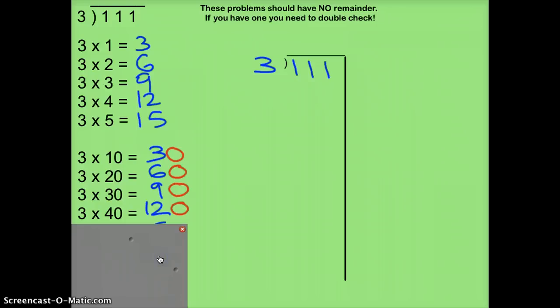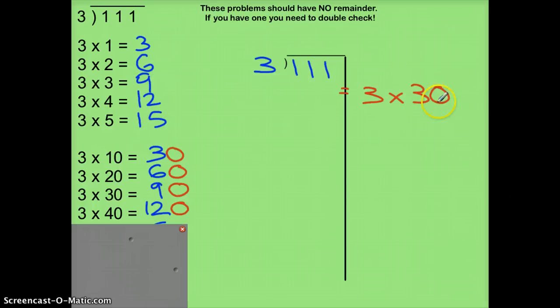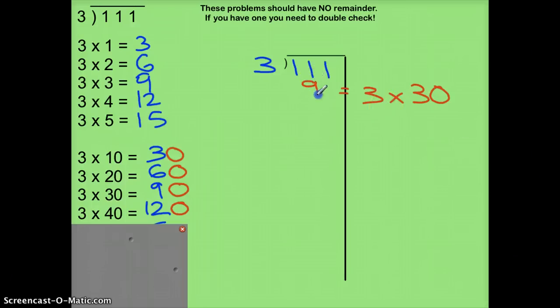I now have enough — I'm definitely going to be able to make enough groups of three. Which facts should I start with? Camden? 3 times 30. Equals what? 90. So I'm going to subtract 30 groups of 3, which equals 90.